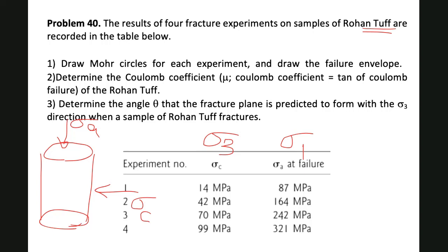What you're gonna do is you have four experiments and you should have four Mohr circles on your graph. We have four experiments, each one has its own sigma_1 and sigma_3, and we are supposed to find a failure envelope.